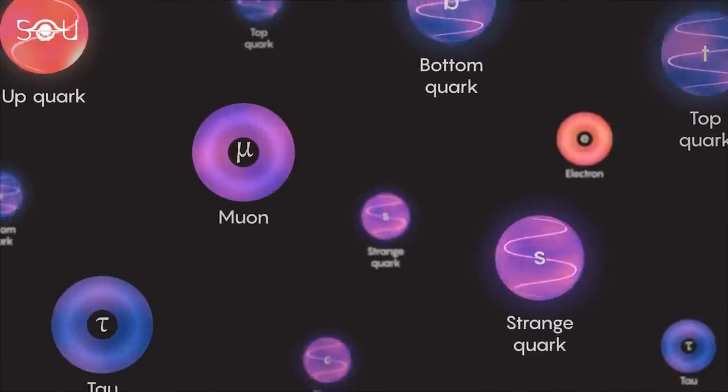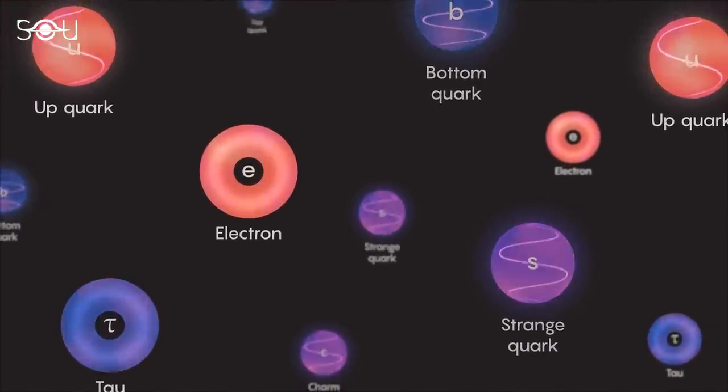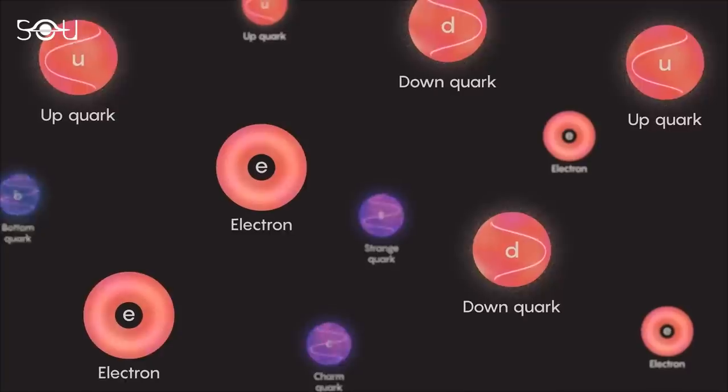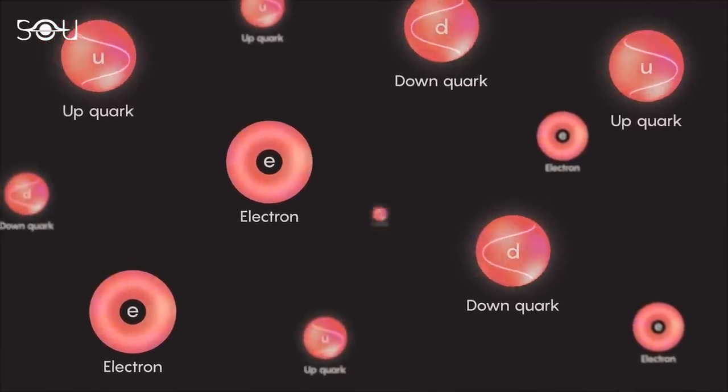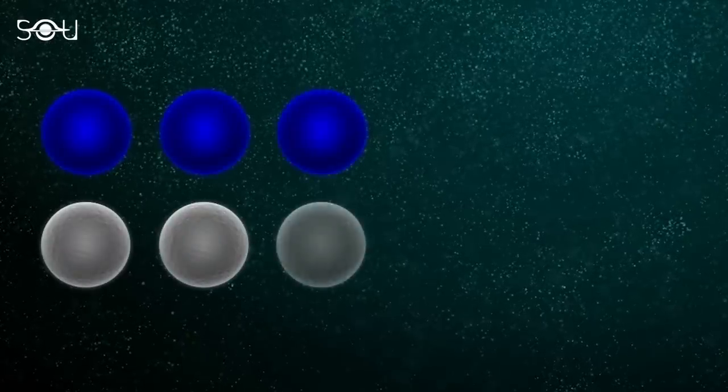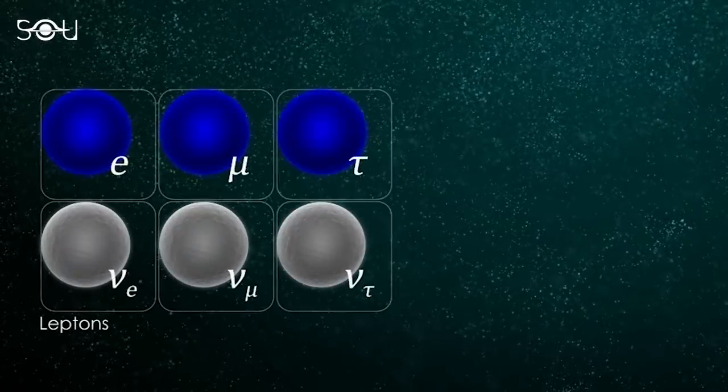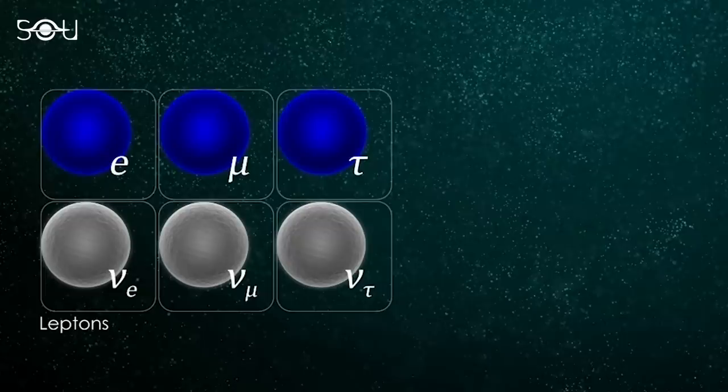In the vast cosmic ballet of particles, one group stands out, the neutrinos, often referred to as the ghost particles. These elementary particles belong to the lepton class, meaning they possess half-integral spin and are indivisible themselves.